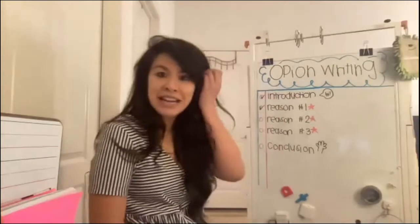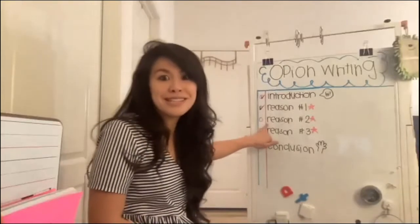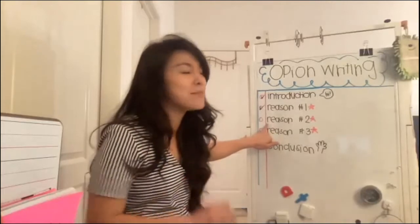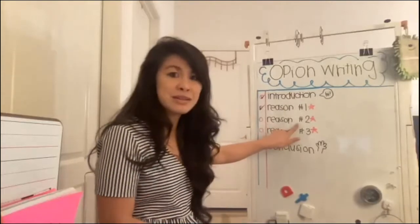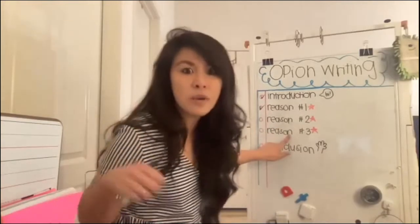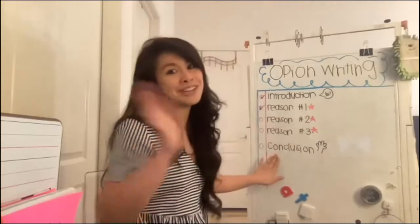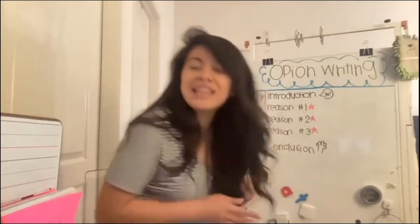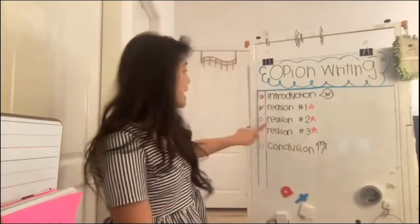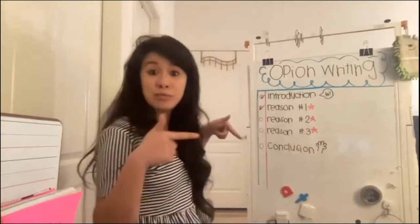In opinion writing, to finish up our book, we're going to need to give not just one reason. It's nice to give people more than one reason because then it will really convince them. So we're going to give reason number two, reason number three — if you can think of four, add four. And then at the very end we're going to have a conclusion, kind of like saying goodbye. Today we're going to focus on reason number two since we already did reason one.